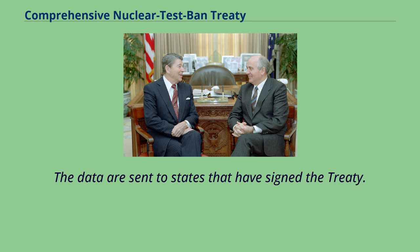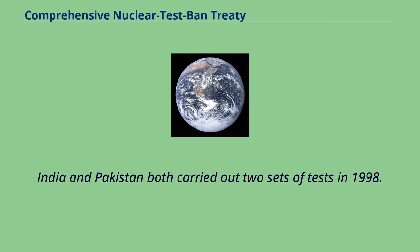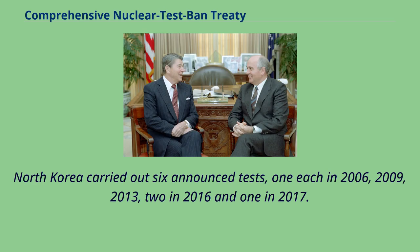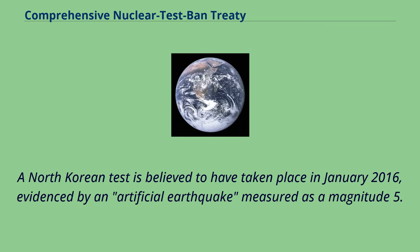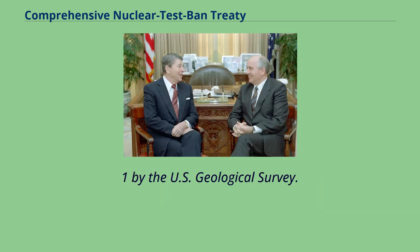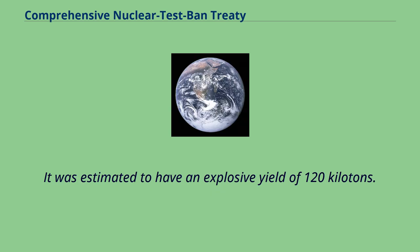The data are sent to states that have signed the treaty. Three countries have tested nuclear weapons since the CTBT opened for signature in 1996. India and Pakistan both carried out two sets of tests in 1998. North Korea carried out six announced tests: one each in 2006, 2009, 2013, two in 2016, and one in 2017. All six North Korean tests were picked up by the international monitoring system set up by the Comprehensive Nuclear Test Ban Treaty Organization Preparatory Commission. A North Korean test is believed to have taken place in January 2016, evidenced by an artificial earthquake measured as a magnitude 5.1 by the U.S. Geological Survey. The first successful North Korean hydrogen bomb test supposedly took place in September 2017, estimated to have an explosive yield of 120 kilotons.